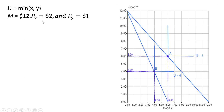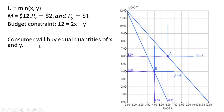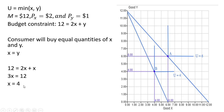Now let's incorporate the price increase. The price of good x is no longer $1 — it increases to $2. So our budget constraint becomes the following. Given this utility function, the consumer will still buy equal quantities of x and y, so x equals y. Replacing y with x in the budget constraint: 12 equals 2x plus x, so 3x equals 12. Dividing by 3, the consumer will buy 4 units of x and 4 units of y. The level of utility here is going to be 4.